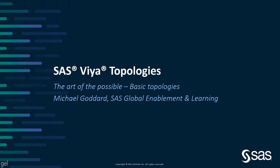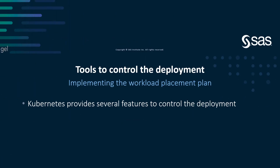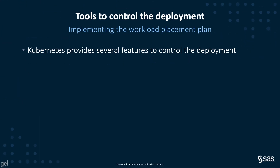This is the second video in a series on SAS Viya deployment topologies. In this video, we will look more deeply at some of the Kubernetes features to control the deployment and some basic deployment topologies for a single SAS Viya environment. First, let's discuss some of the tools to control the deployment.